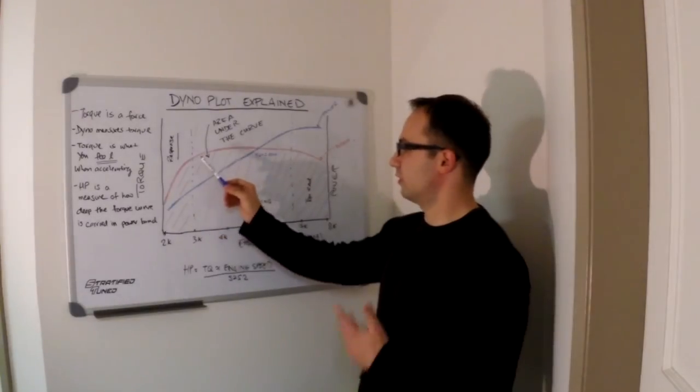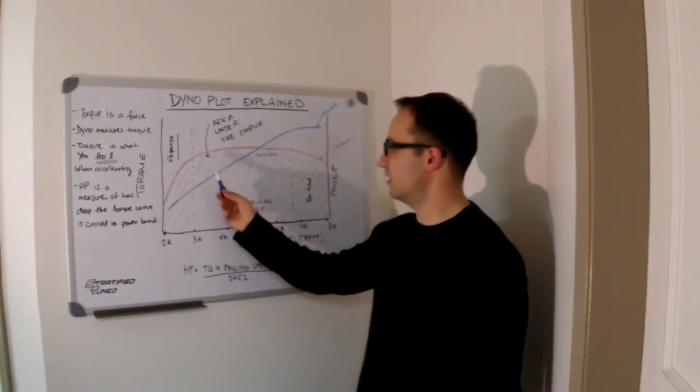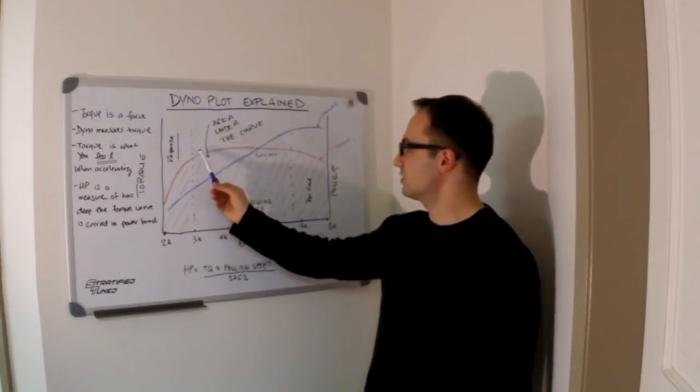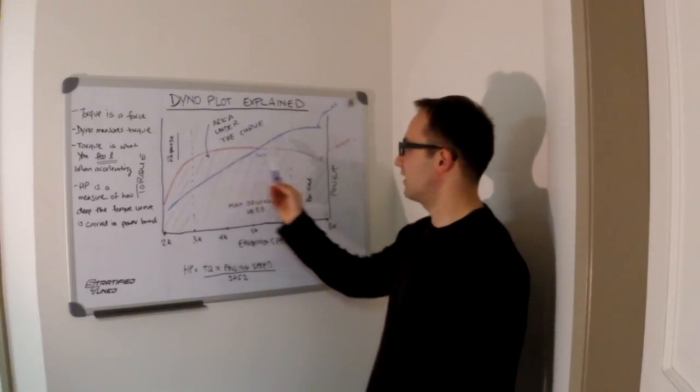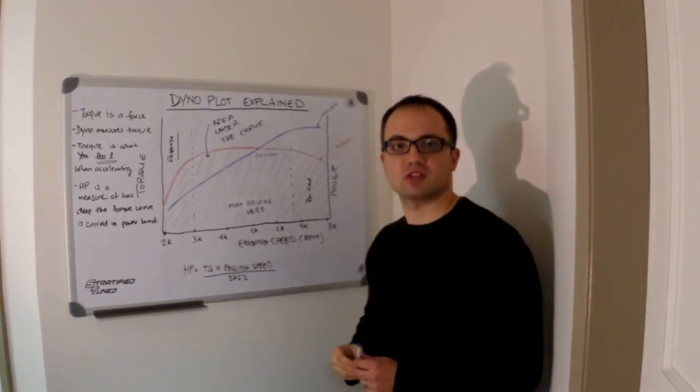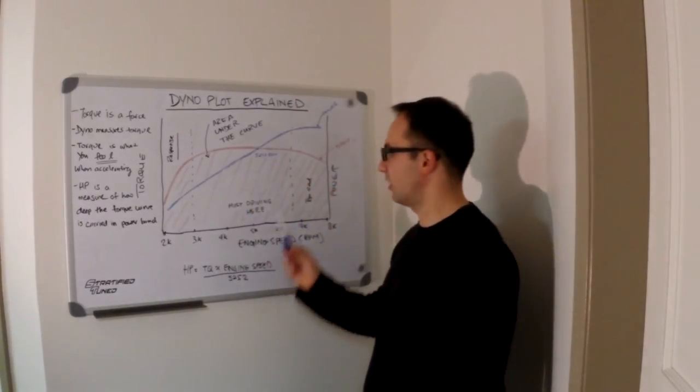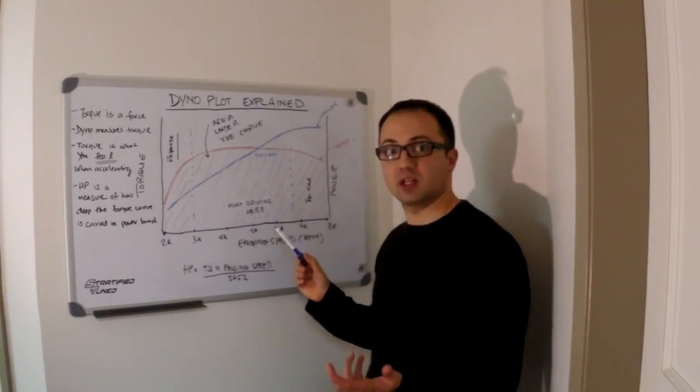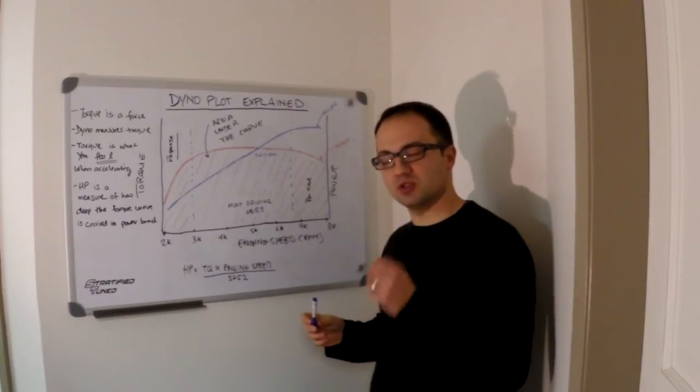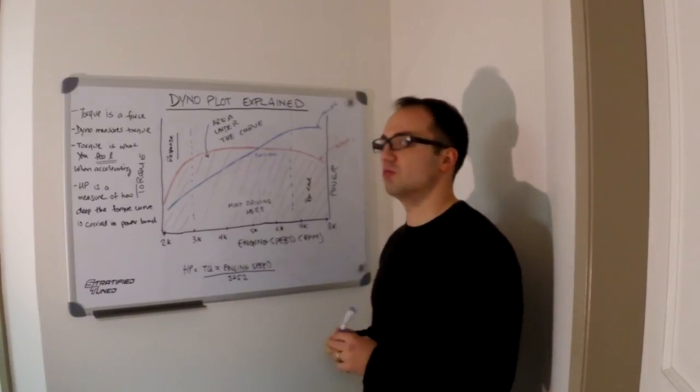After your turbo has spooled, or your engine has come up to speed in normally aspirated conditions, you'll see that your torque curve will flatten out. You want this torque curve to be flat for as long as possible. A flat torque curve means that when you step on that accelerator, you'll always get the same predictable response because your engine is producing the same amount of force to move you forward.